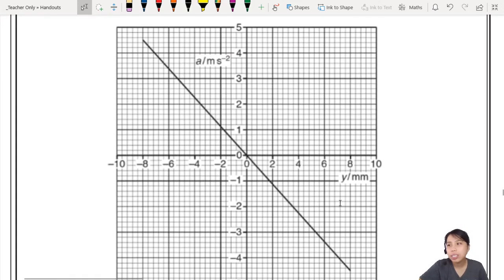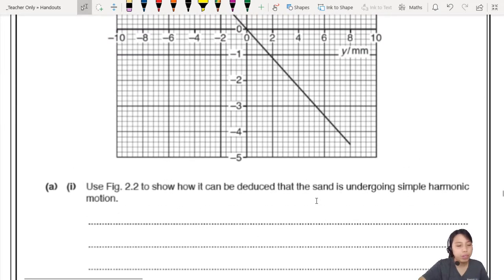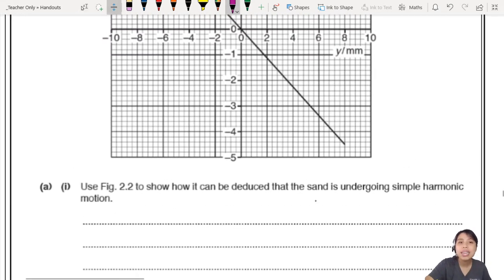Let's take a look at the question. Here we have a very nice acceleration displacement graph. And the first question they ask us is, show how it can be deduced that the sand is undergoing simple harmonic motion. Simple harmonic motion means the general equation is a equals negative omega square x.